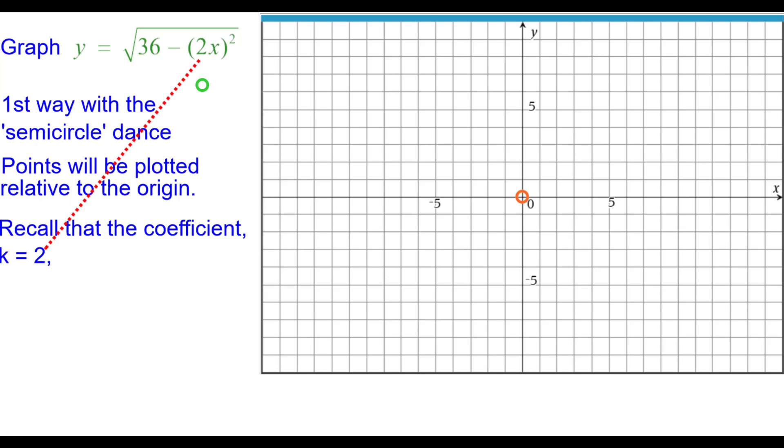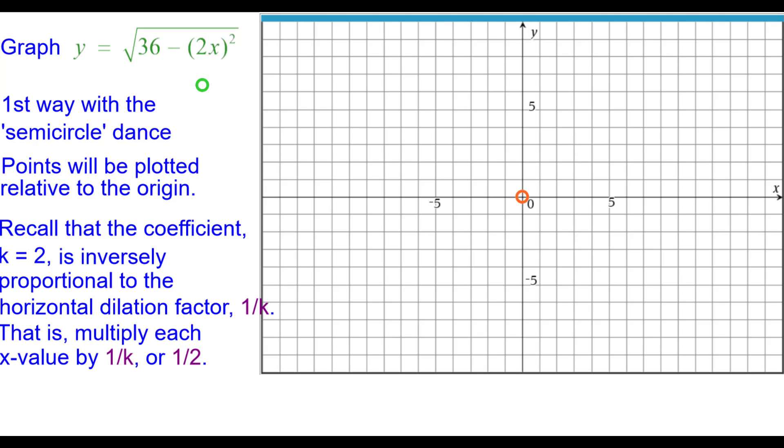Recall that the coefficient k equals 2 is inversely proportional to the horizontal dilation factor. That is, we multiply each x value by the reciprocal of that value, which is 1 half. Since r squared is 36, that means the radius of this semicircle is 6.